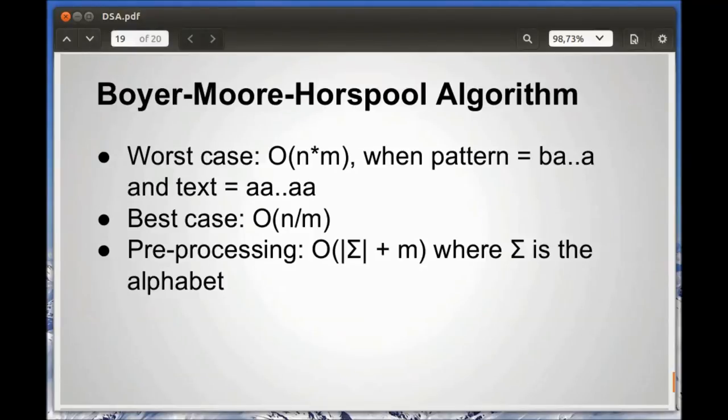The worst case running time is no better than the Naive method: O(n*m). But in practice, the best case would be O(n/m). The preprocessing takes O(|Σ| + m), compared to the Knuth-Morris-Pratt, which takes Θ(m).